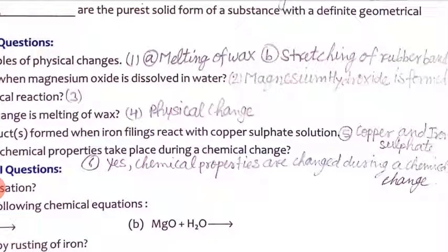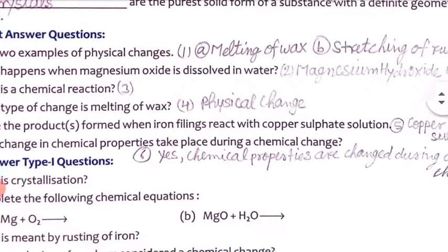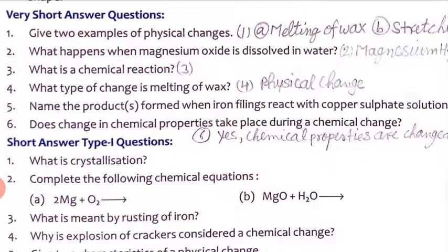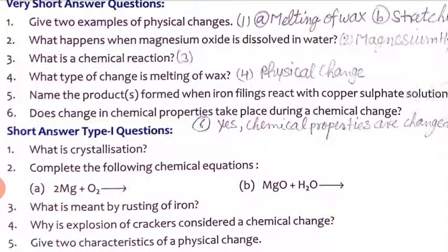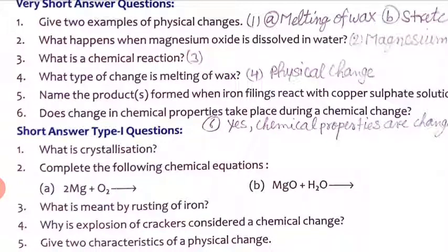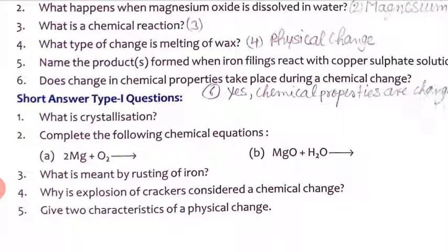What is a chemical reaction? The process by which one or more substances transform into a new substance having entirely different properties and composition from the original substance is called a chemical reaction. Fourth question: what type of change is the melting of wax? That is a physical change.